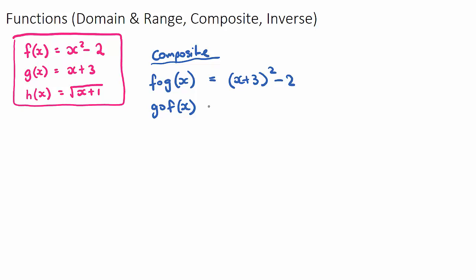For gof, which is g(f(x)), start with the g function (x + 3) and replace x with the f(x) function (x² - 2). So we get (x² - 2) + 3, which simplifies to x² + 1. That's how we find composite functions — substitute one function into another.